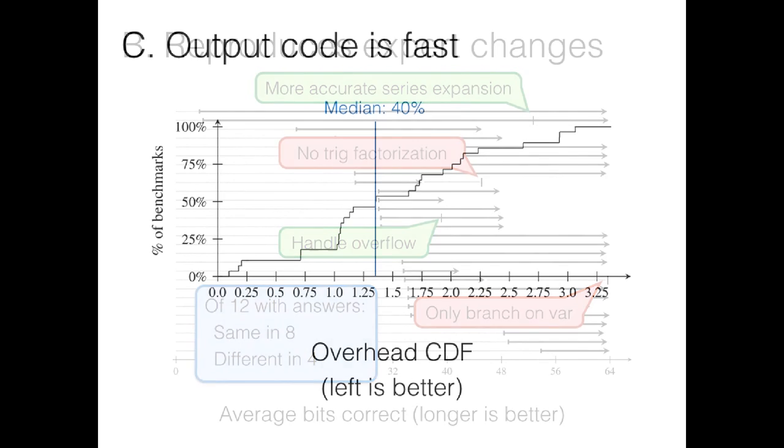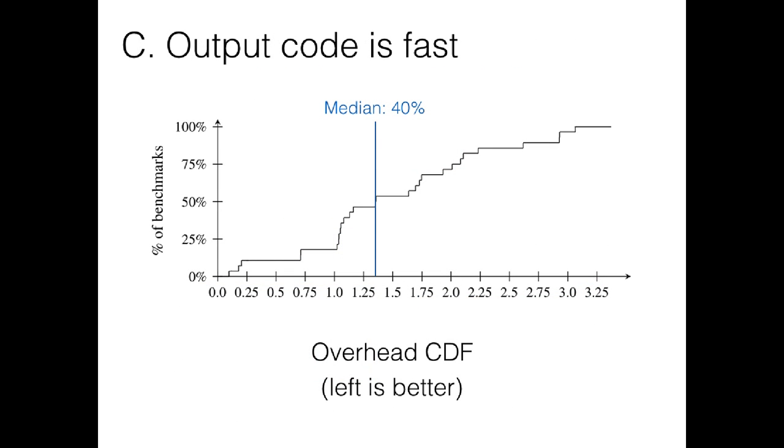We also checked that Herbie's output code was fast. And indeed, it was. The median overhead from Herbie was about 40%. Now, that's not nothing. But it's a lot better than a 100 to 1000x slowdown from using an arbitrary precision library. Now, these were all textbook examples. So we wanted to make sure that Herbie was also useful for the code people actually wrote. But we're pretty confident that's the case.